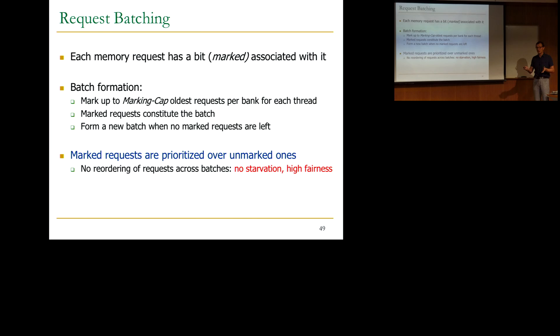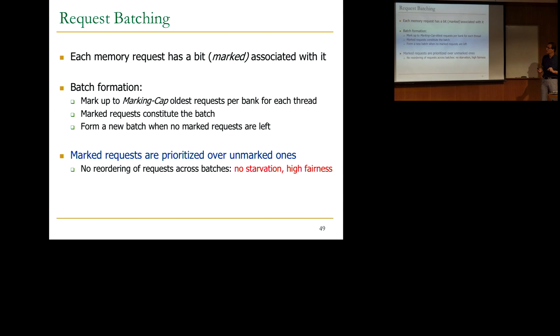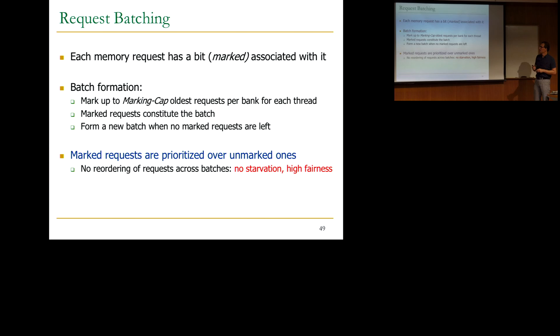How do you do batching? It's actually very simple. You associate each memory request with a single bit — the marked bit — where marked means it's part of the batch, the oldest batch. To form a batch, you mark up to some number (the marking cap) of oldest requests per bank for each thread. All marked requests constitute the batch. You form a new batch when no marked requests are left. Marked requests are always prioritized over unmarked ones. There is no reordering of requests across batches, so there is no starvation and high fairness.